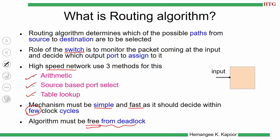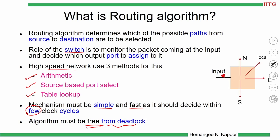For example, if this is my switch — the peach color box — and some packet is coming on the input channel, it has to go to a destination. The destination information comes with the packet on this port. The switch has to decide where to route it further: should it go to the north side, the south side, the east, or is it destined for the local port? This decision logic is done by the routing algorithm.